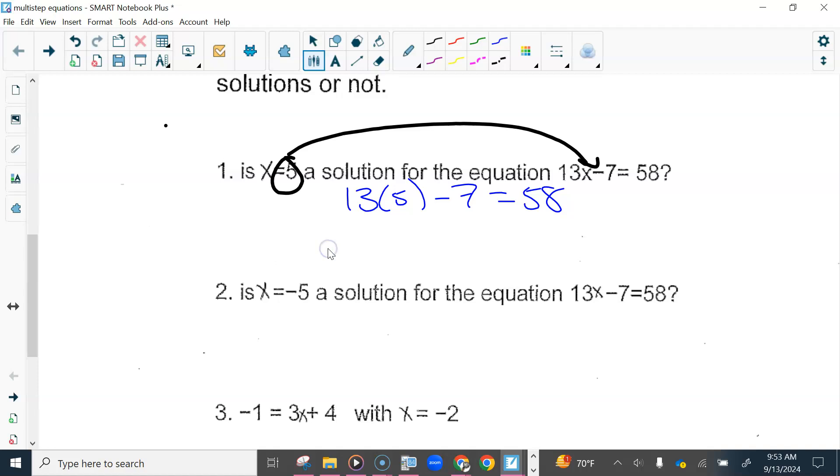So 13 times 5 is 65 minus 7. And then if I were to subtract this, do we get 58? Yes. So this is a true statement. This is the solution.